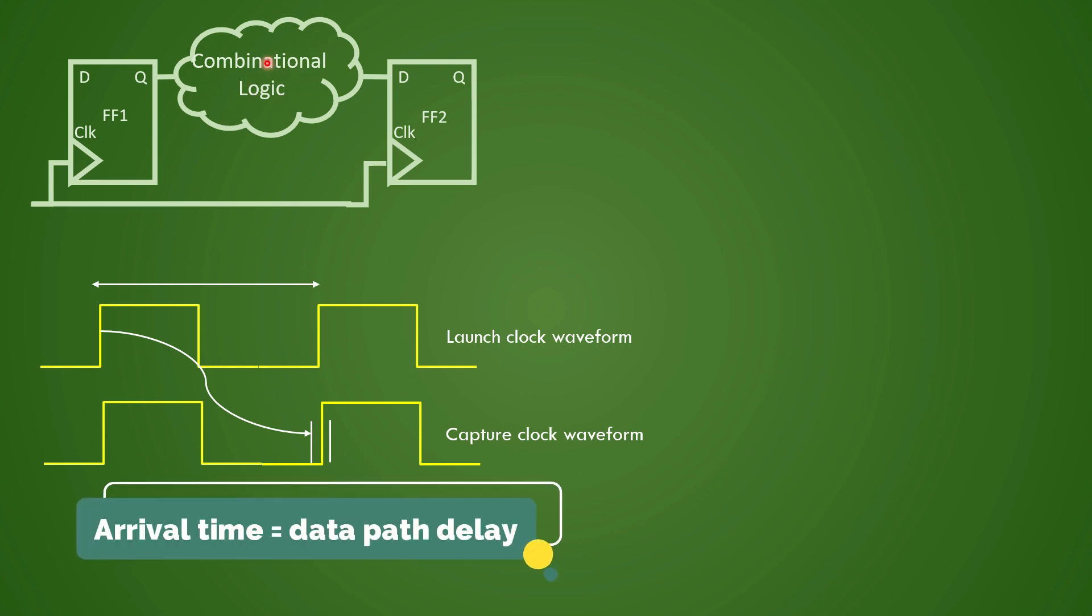Here this is our data path combinational logic and your TCQ delay, that is your data path delay, and required time is your total clock path delay. Hence a setup timing calculation specifies how much maximum path a data path can take and we have understood that concept through the waveform also.